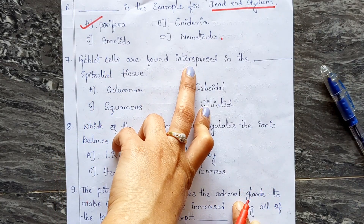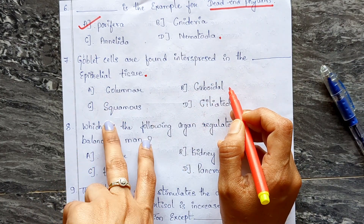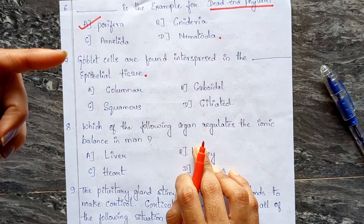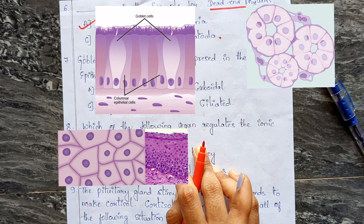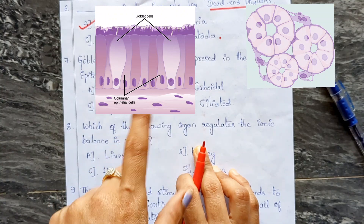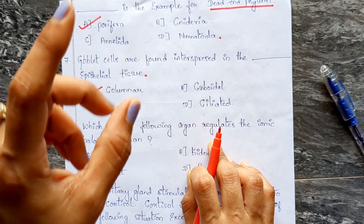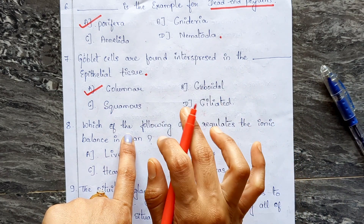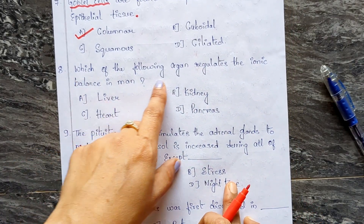Question seven: goblet cells are found in which epithelial tissue? Options: A) columnar epithelium, B) cuboidal, C) squamous, D) ciliated. Looking at the diagram: cuboidal cells are round/square-shaped, squamous cells are long and flat, ciliated cells have cilia-like structures. Goblet cells are found in columnar epithelial tissue, so the correct answer is A.